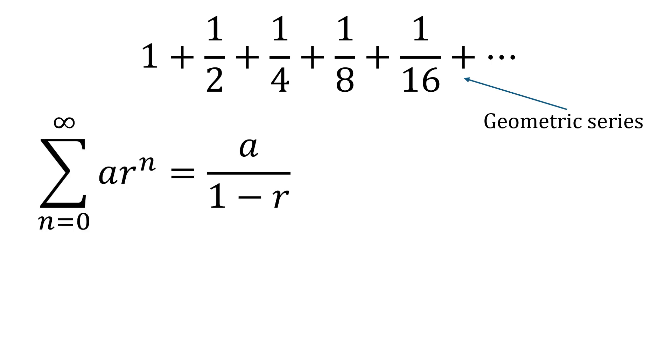Our notation for this, we're going to look at the sum from n equals zero to infinity of this series, ar^n, where a is the first term. So in our case one, r is the common ratio, which in our case is a half.